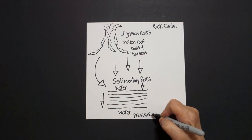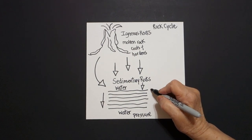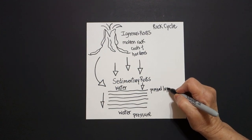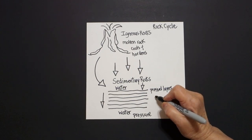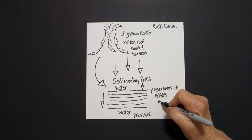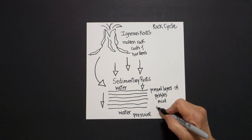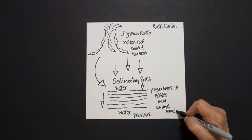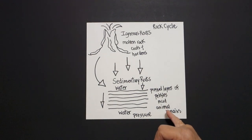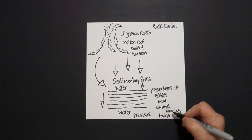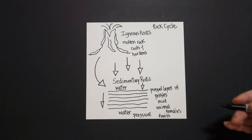Because these layers are pressed, we're going to put: pressed layers of pebbles — little pebbles — mud, and animal remains. Which means this is where we find fossils. So I'm going to write 'fossils' down here. It's pressed layers of pebbles, mud, animal remains — makes fossils.